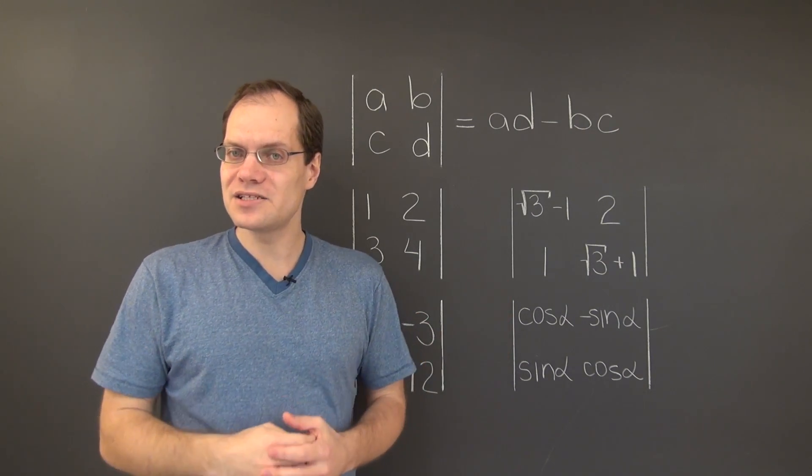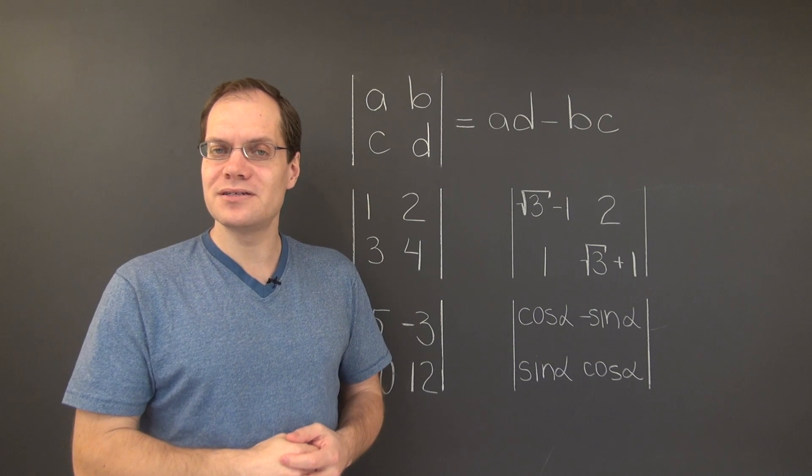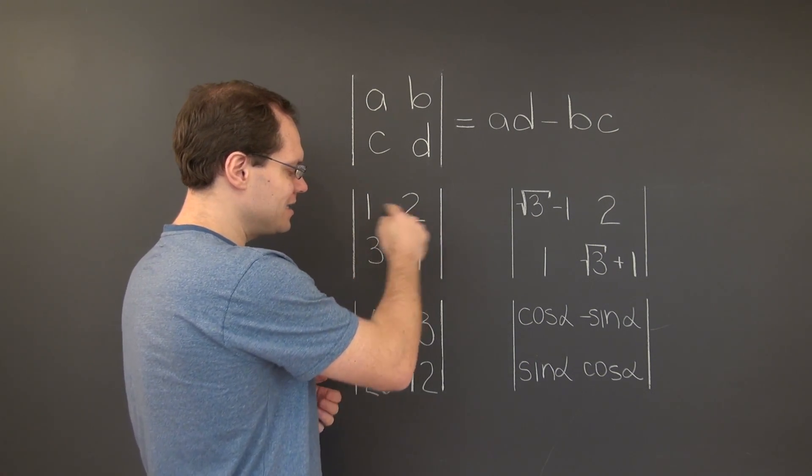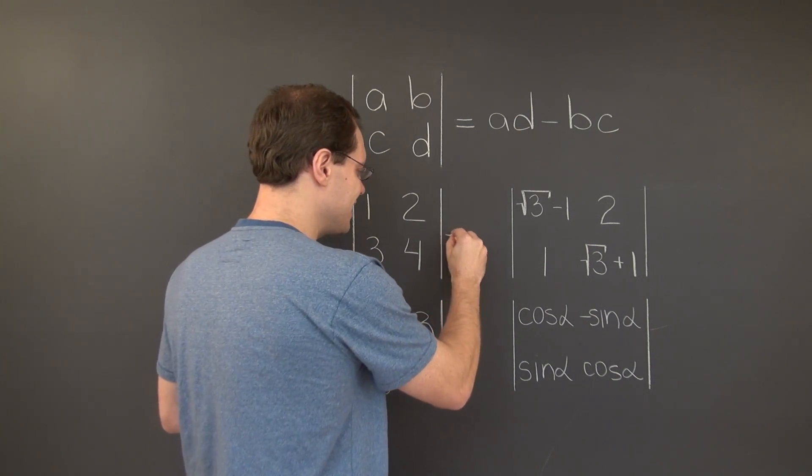Applying this formula to this matrix right here, we find that its determinant equals 4 minus 6, which is negative 2.